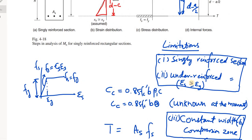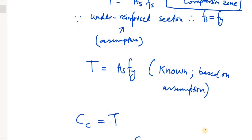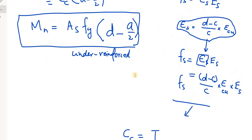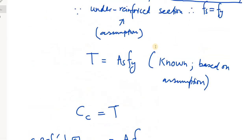If we have singly reinforced section or under-reinforced with constant width compression zone, then MN can be calculated as this. I have read it. So, MN is the simplest expression for these conditions, and we are doing this.